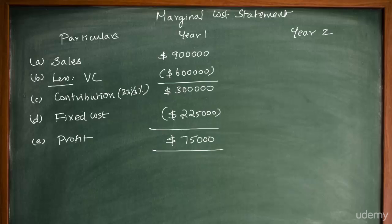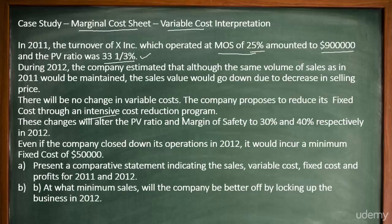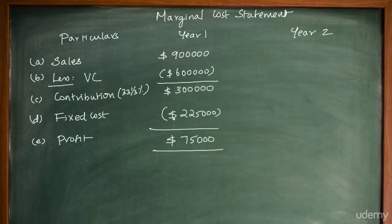The marginal cost statement for Year One is now complete. Moving to Year Two: the company expects the same volume of sales, but sales value will decrease due to lower selling price. Since volume is maintained and there is no change in variable cost, the variable cost in Year Two remains six lakh dollars — the same as Year One.